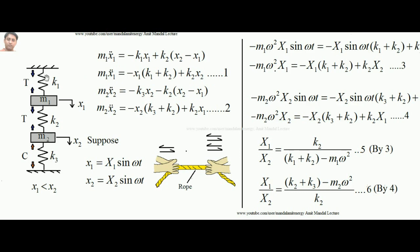This is a simple two-degree-of-freedom system — you can see two masses connected by springs, vibrating independently. The force balance equations are: mass times acceleration, m1*x1̈ = -x1*(k1+k2) + k2*x2, and for mass m2: m2*x2̈ = -x2*(k3+k2) + k2*x1.